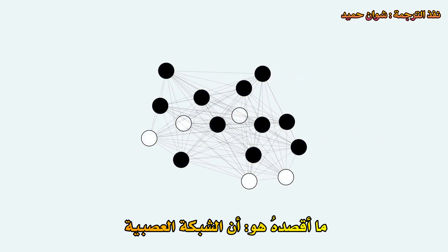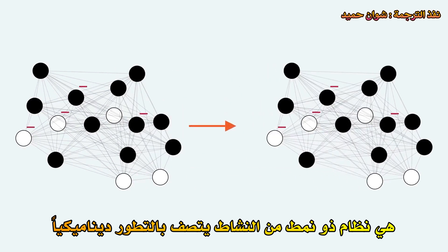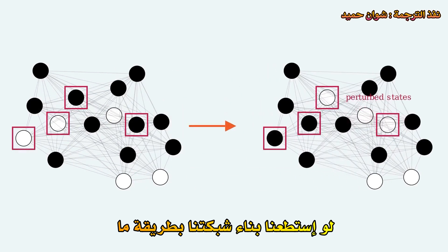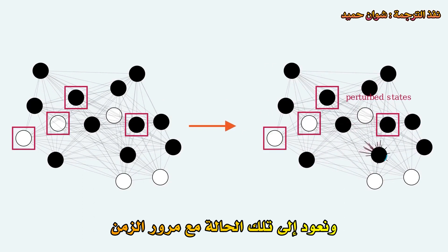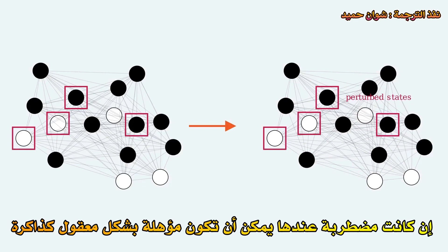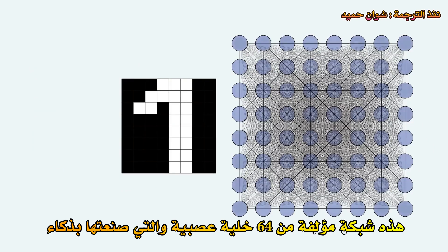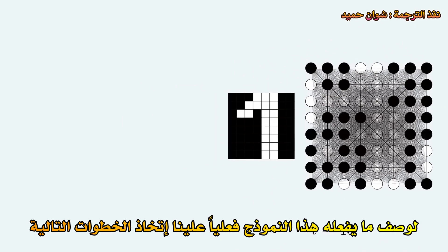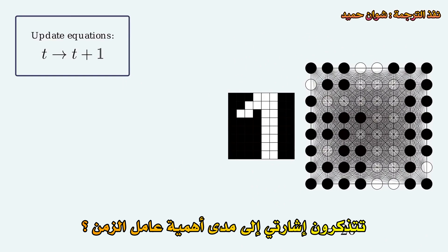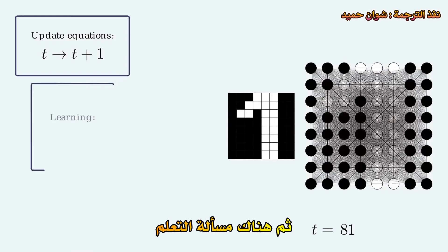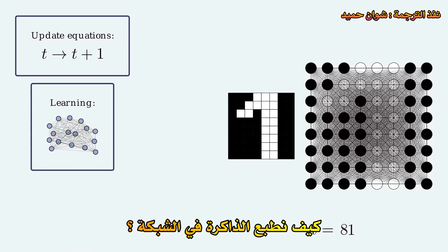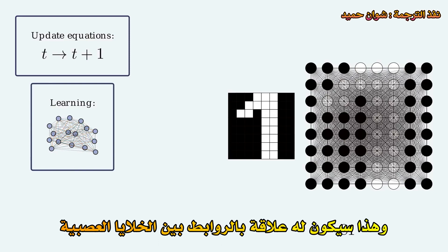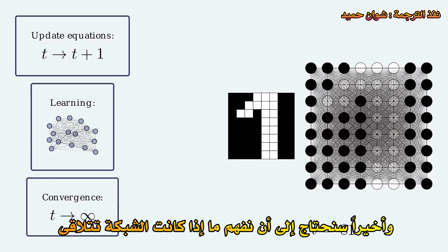And the metaphor is not arbitrary. I actually do think that networks of neurons are kind of like that. A neural network is a system with a pattern of activity that dynamically evolves. If somehow we could construct our network such that it would have some preferred state and would return to that state over time if it was perturbed, then that could reasonably be qualified as a memory. This is a network of 64 neurons that I cleverly constructed such that it memorized this pattern of 8x8 binary pixels. To describe what this model is actually doing, we need to take the following steps: describe how the activity changes over time, address the question of learning — how we imprint memories into the network through the connections between neurons — and understand if and when the network converges to its memory states.